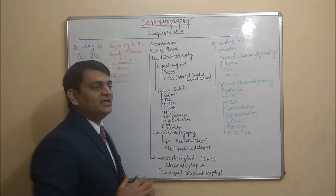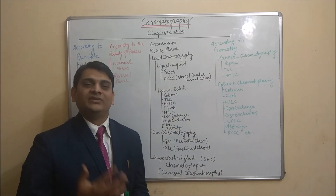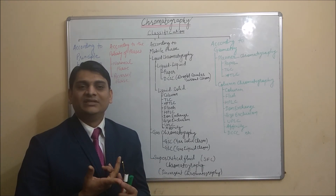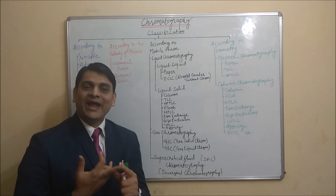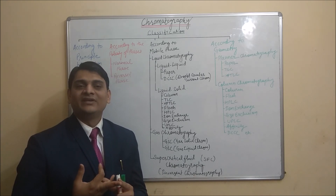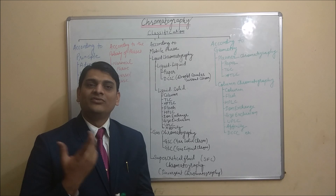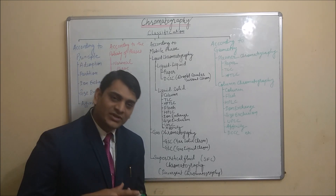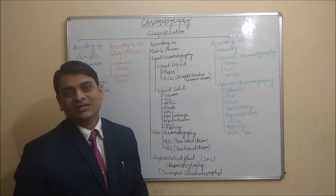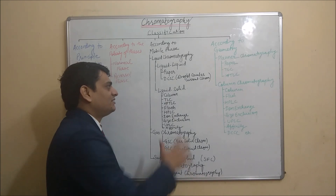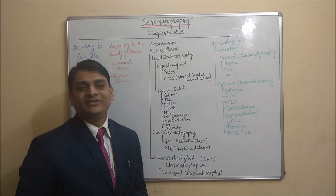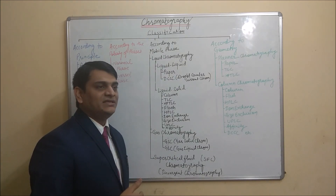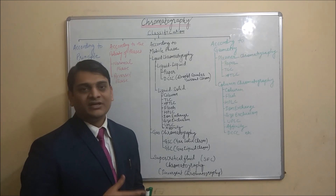In DCCC (droplet counter-current chromatography), two types of liquids are used: one is a high-density liquid and the other is a low-density liquid. If the high-density liquid is used as the stationary phase, then separation takes place due to partition coefficient. Details of DCCC will be discussed separately.